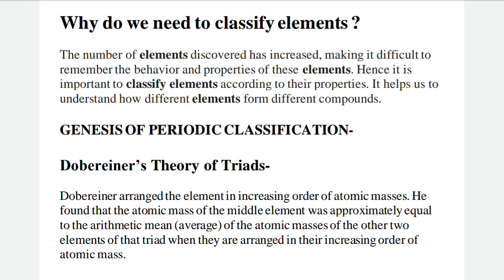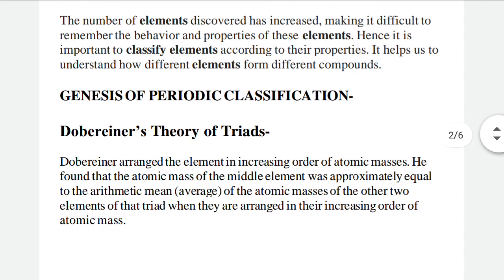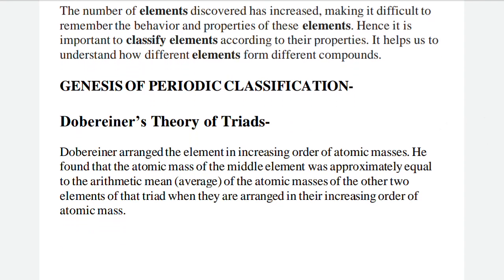First came Dobereiner's Theory of Triads. Dobereiner was a scientist who studied elements in groups of three. He arranged the elements in increasing order of atomic masses.